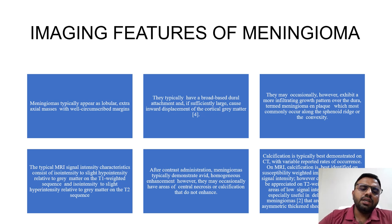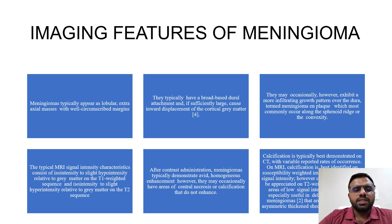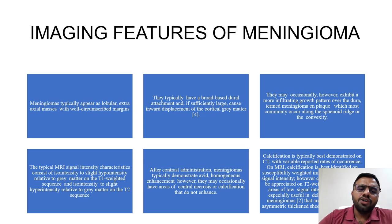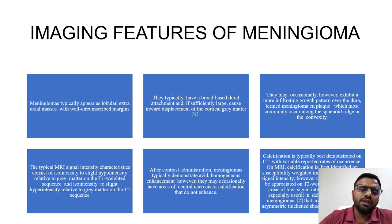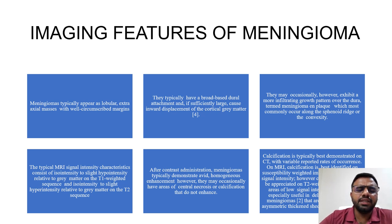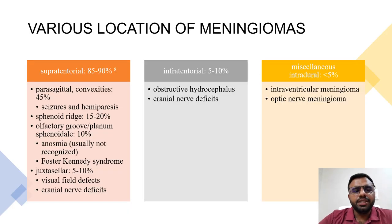Calcification is typically best demonstrated on CT. On MRI, calcification is best identified on susceptibility weighted images as areas of low signal intensity, and may also be appreciated on T2-weighted sequences as areas of low signal intensity. Contrast is especially useful in delineating en plaque meningiomas, which are typically seen as asymmetric thickened sheets of enhancing dura.